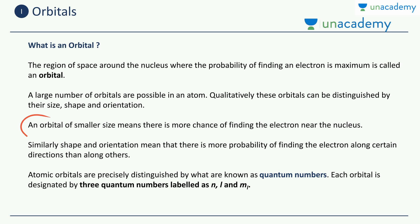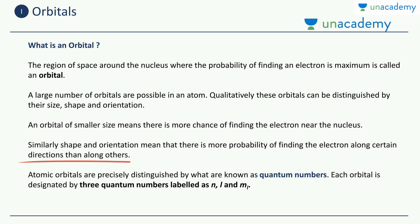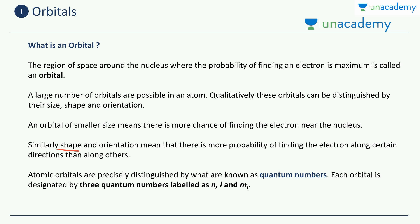An orbital of smaller size means there is more chance of finding the electron near the nucleus. If it is a small volume, you are more certain that the electron is inside that orbital — hence the possibility of finding an electron at a specific spot will be more inside a smaller-sized orbital. Similarly, shape and orientation mean there is more probability of finding the electron along certain directions than others. Along that shape and along that orientation, you will have the maximum probability of finding the electron. So all three — the size, the shape, and the orientation — define how an orbital is.